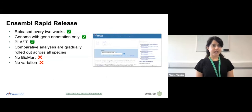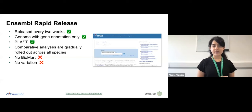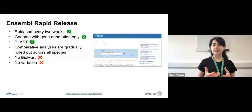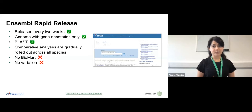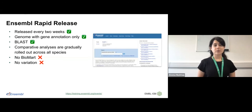Apart from the main Ensembl site and Ensembl Genomes, we also have Ensembl Rapid Release. Because sequencing data is becoming available rapidly for new species — especially with projects like Darwin Tree of Life — Ensembl Rapid Release is a lightweight version of Ensembl. It has genomes with gene annotation and supports some tools like BLAST, with some comparative analysis gradually being rolled out. However, it doesn't support BioMart or variation data. But if you're interested in a newly sequenced species, you will find that annotation data through Ensembl Rapid Release.